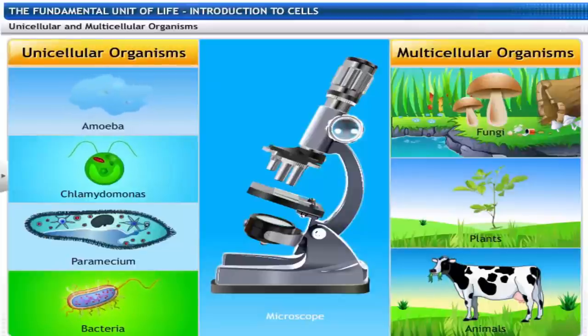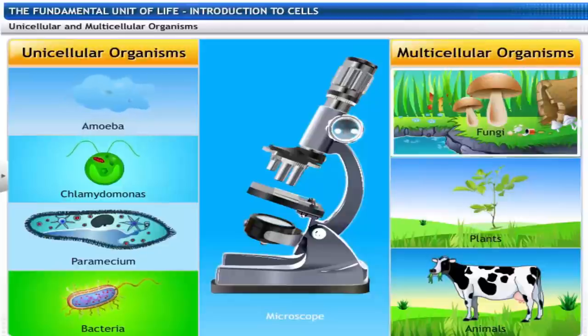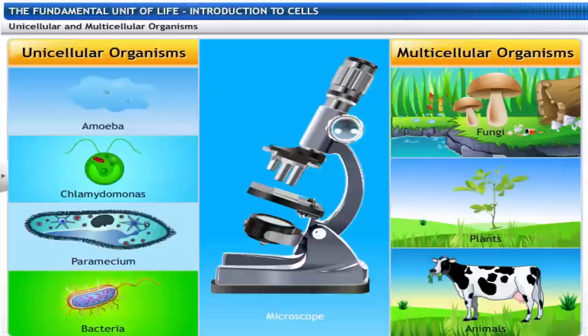On the other hand, in organisms like fungi, plants and animals, multiple cells group together to form tissues. These organisms are called multicellular organisms.